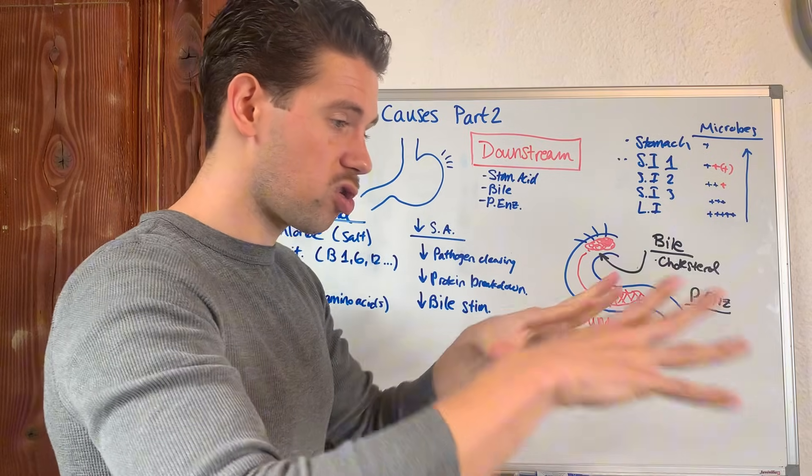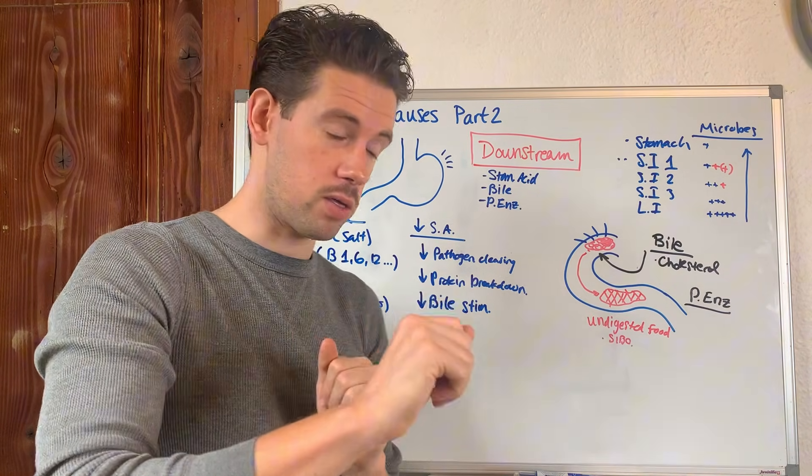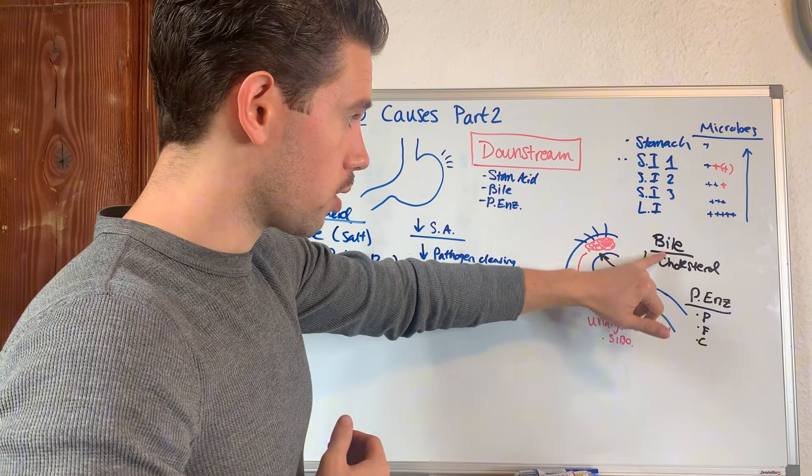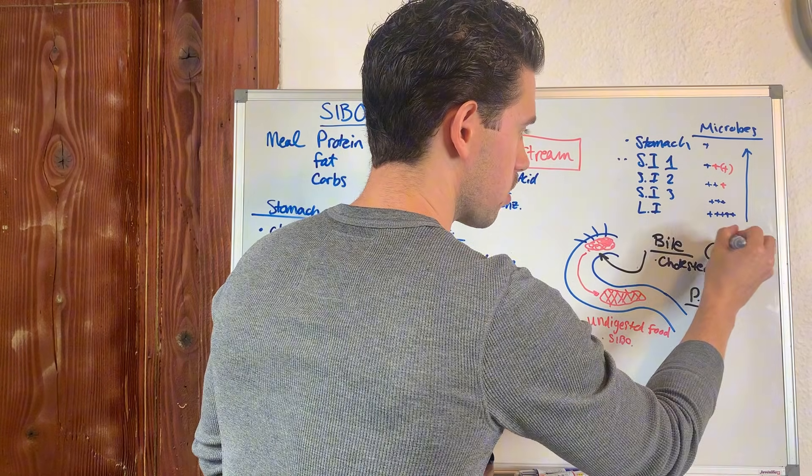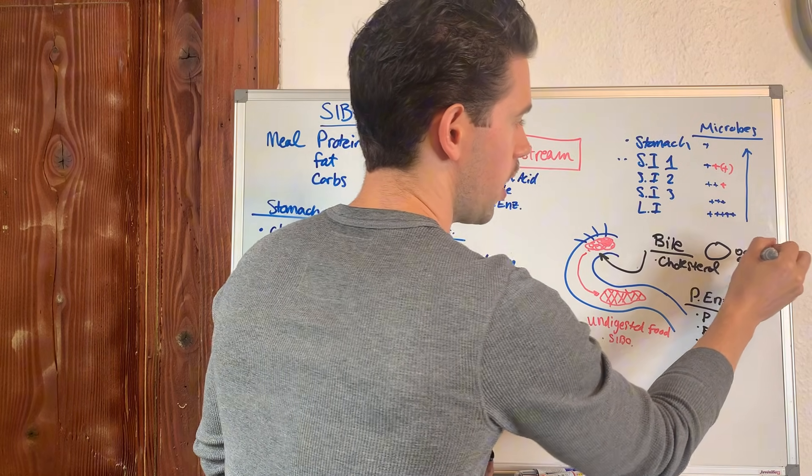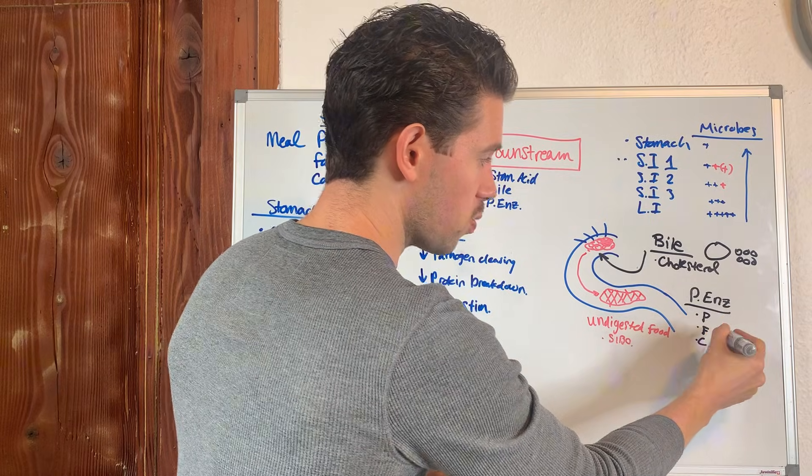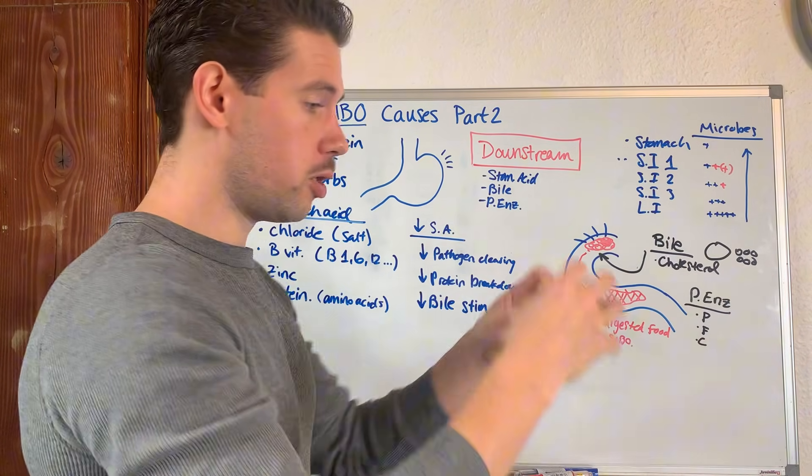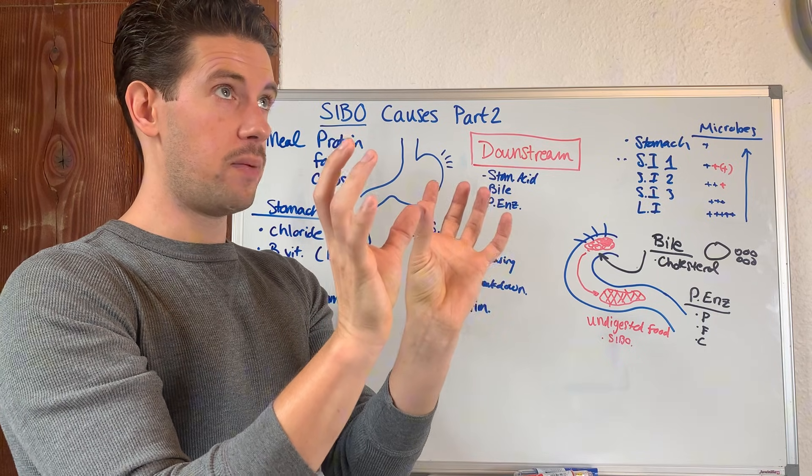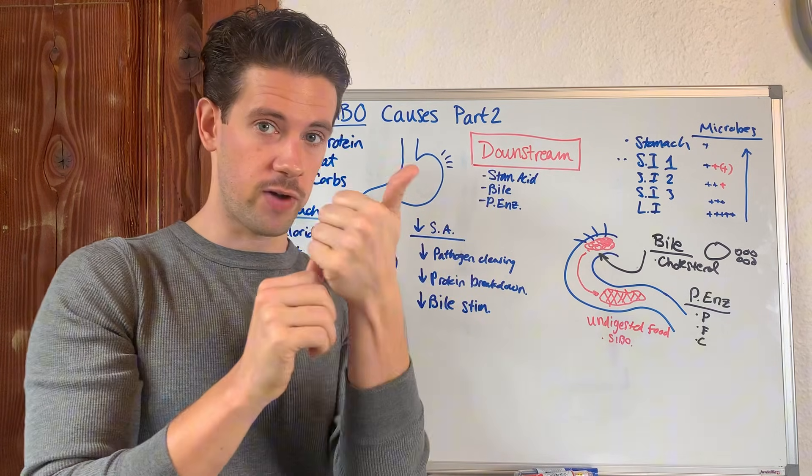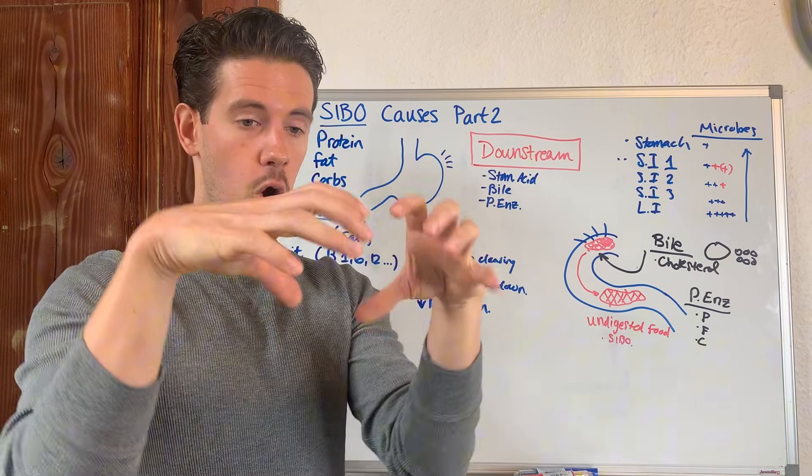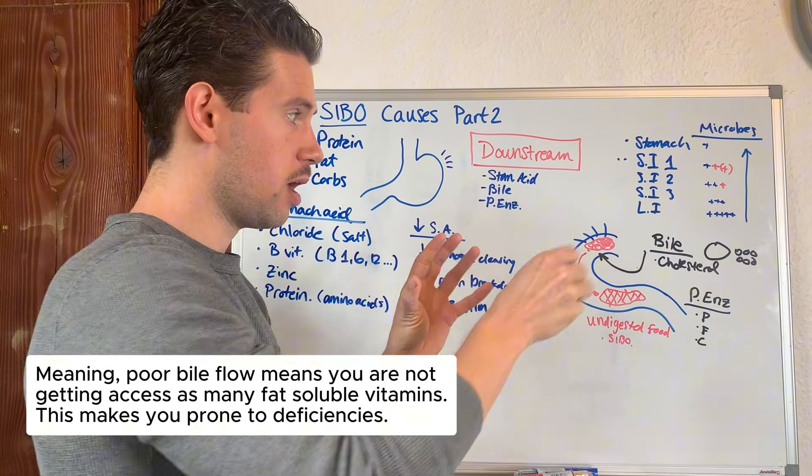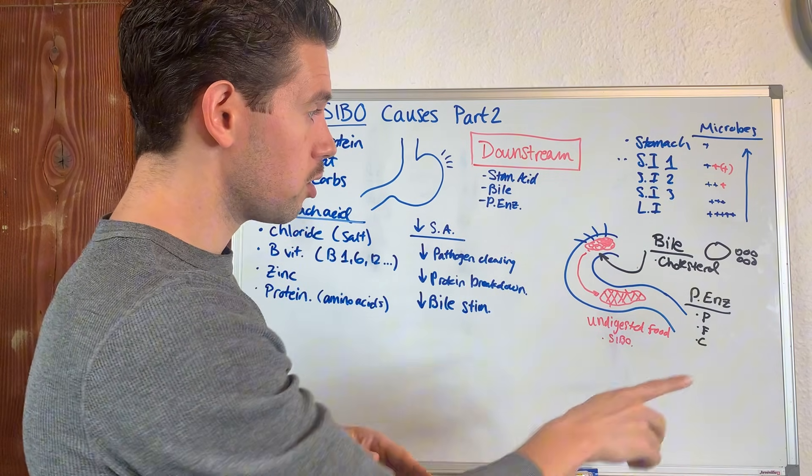The bile is going to emulsify the fats. It'll break down your fats into smaller pieces so that when it gets to the pancreas, the pancreas digests all three: protein, fat, and carbs. The bile is going to help take your big fats and break them down into smaller fats. When you break down these fats into smaller fats, you open up the fat molecules so that the fat-soluble vitamins—vitamin A, D, E, and K—can be opened up and released.